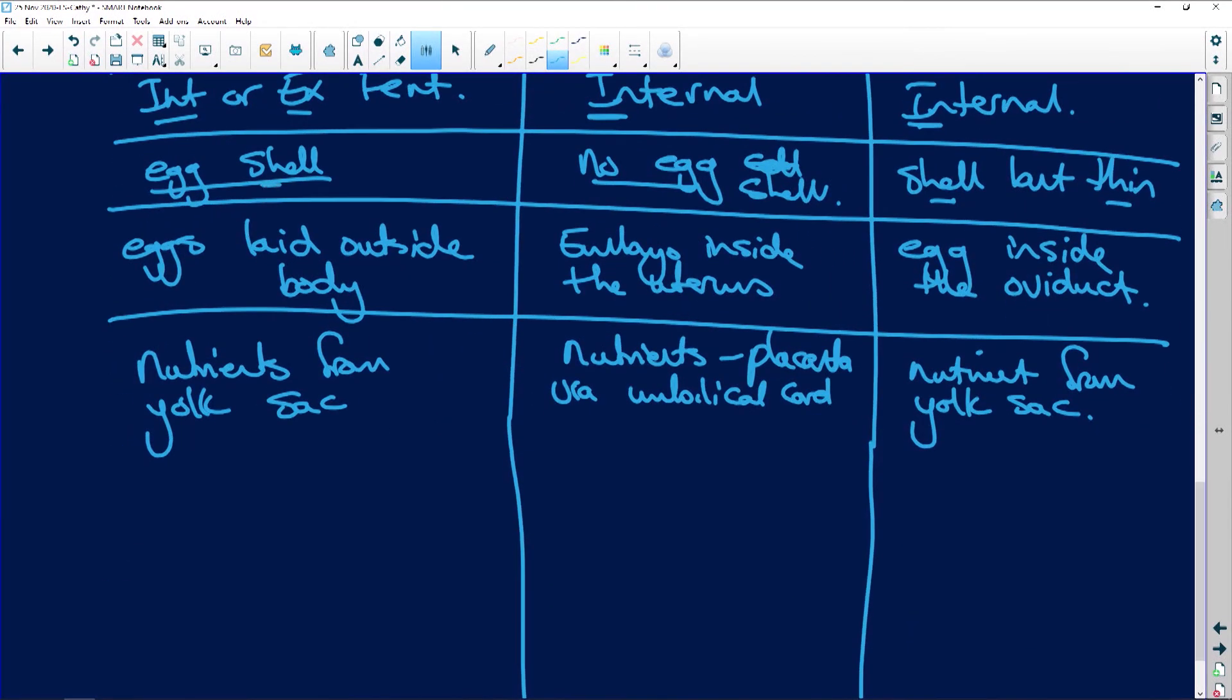Here we have, so this has an egg shell, no egg shell, a shell but the shell is very thin. It's not there to stop anything happening. Then here the eggs are laid outside the body. Here the embryo is inside the uterus from fertilization. And here the egg is inside the oviduct. So that's why ovoviviparous is a combination. Here nutrients are from the yolk sac. Here the nutrients are from the placenta via the umbilical cord. And here the nutrients are from the yolk sac as well.